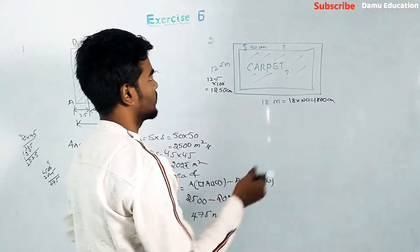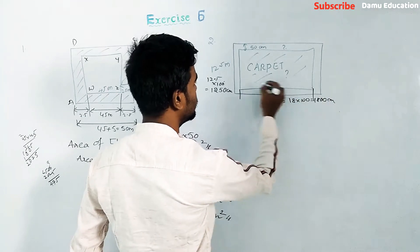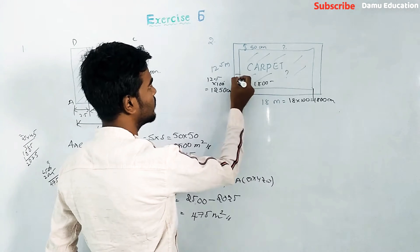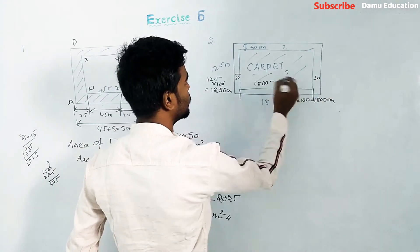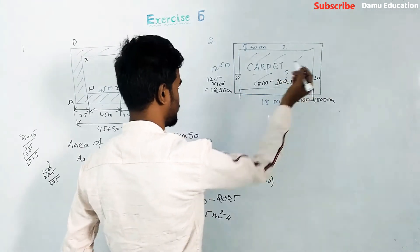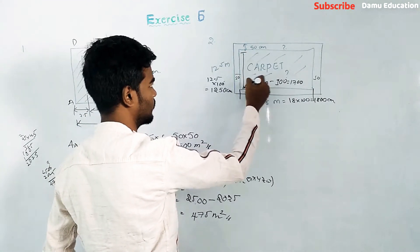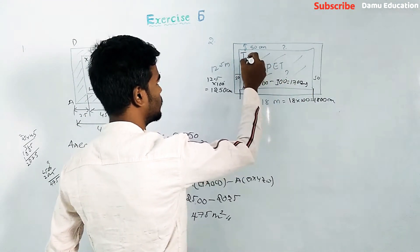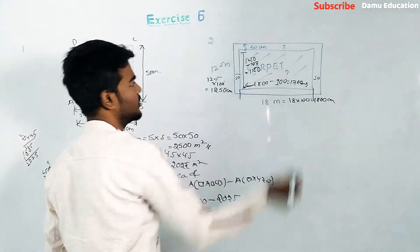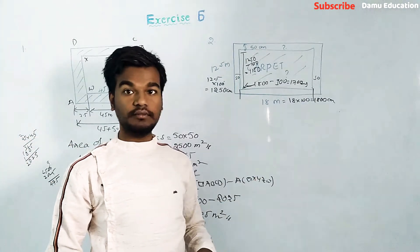For the carpet dimensions, we leave 50 centimeters on each side. So from 1800, we subtract 50 on this side and 50 on the other side — subtracting 100 total — giving 1700 centimeters. And from 1250, subtracting 100 gives 1150 centimeters.